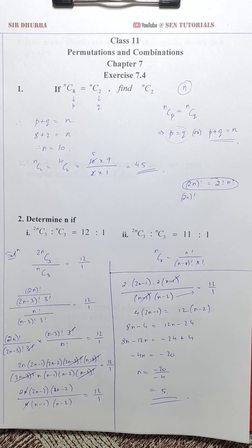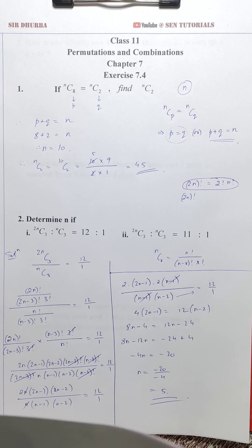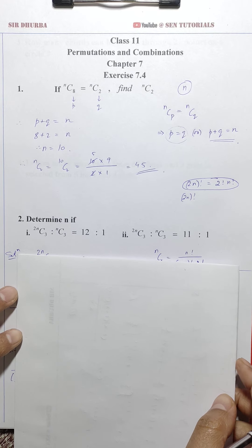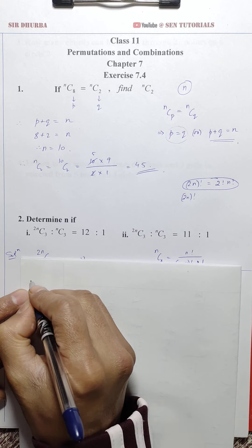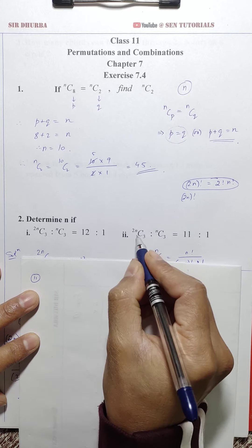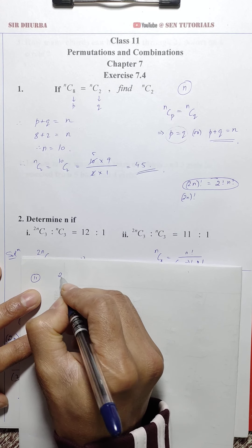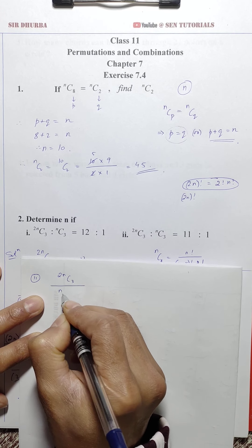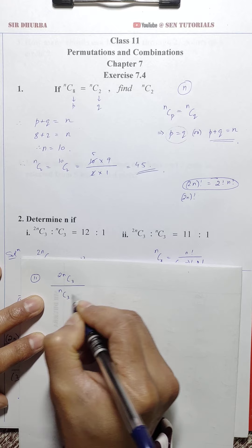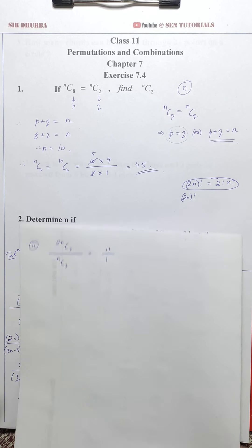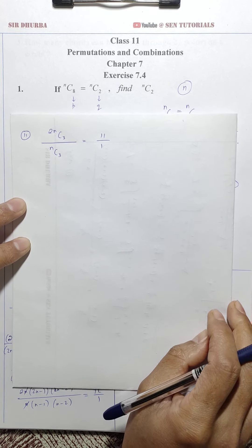Now let's move on to part (ii): 2nC3 / nC3 = 11/1. I said I'd show you the shortcut method here.